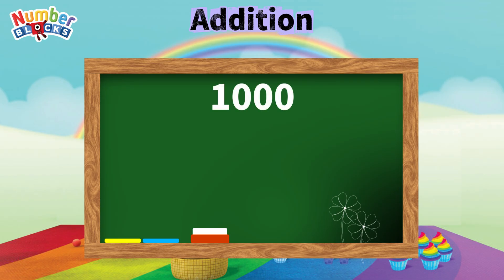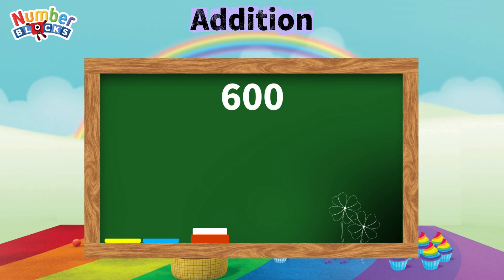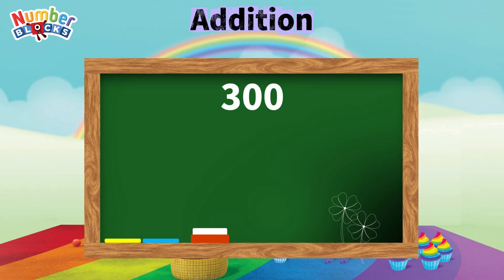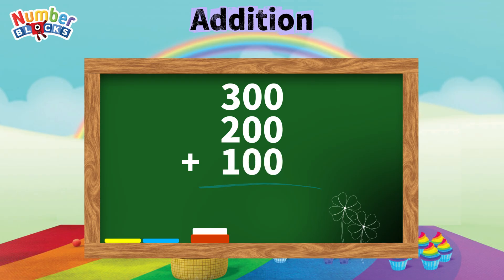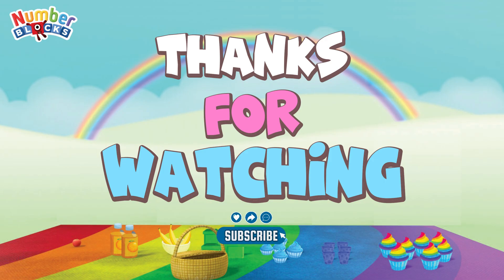1,000 plus 900 plus 800 is equals 2,700. 600 plus 500 plus 400 is equals 1,500. 300 plus 200 plus 100 is equals 600. 300 plus 500 is equals 1,500.